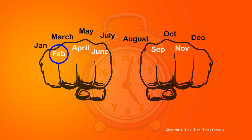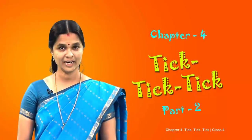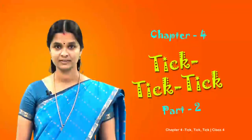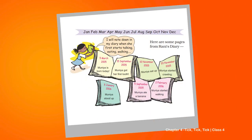The months in the valleys have 30 days, except February. February does not have 30 days - it has 28 or 29 days. Now, is it easy to remember the number of days in the months? Now let us go back to Rani's story.